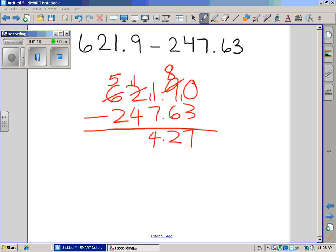Eleven minus four is seven, and five minus two is three. My final answer is three hundred seventy-four and twenty-seven hundredths, or 374.27.